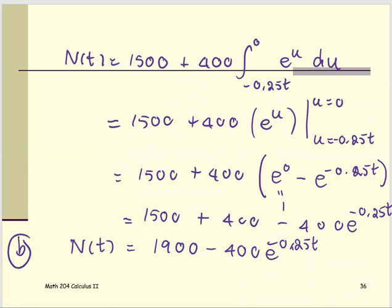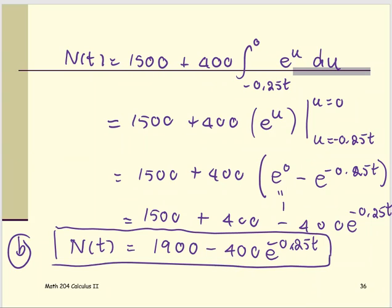As the formula to find the population of the bacteria after T, as T greater than or equal to zero. So this is the answer for part B, or we call this the future value formula.